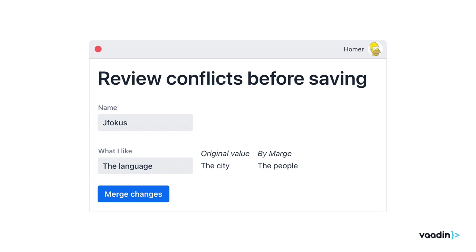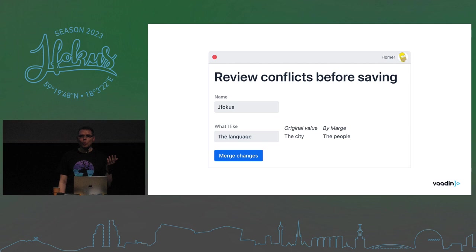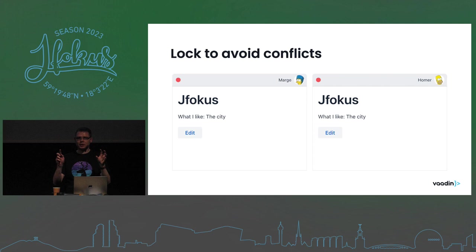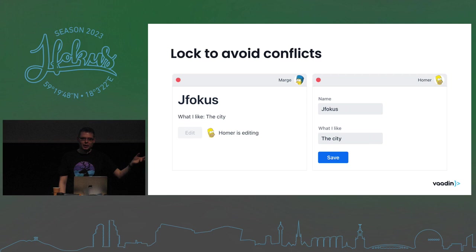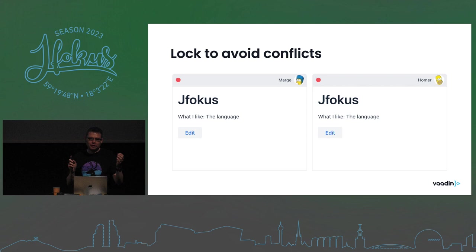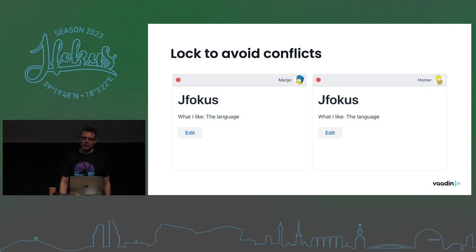One thing we can do to improve the user experience is locking. If one user clicks the edit button, it becomes disabled for everyone else looking at the same data. You can also see who is currently editing. When that person saves, the edit button becomes available again immediately, and everyone can immediately see the updated values without needing to refresh.